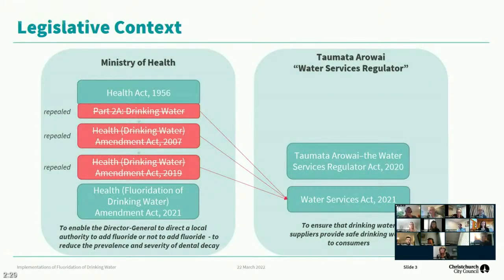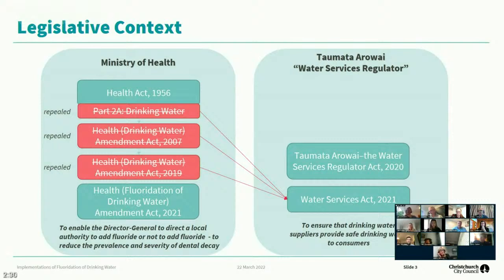It is important to understand where the Fluoridation Amendment Act fits in. Firstly, the Health Act established in 1956 provides the mandates and responsibilities for the Ministry of Health. Previously, drinking water was regulated as part of the Health Act, but this has now been repealed and drinking water is now legislated under the Water Services Act, which together with the Water Services Regulator Act provides the mandates for the new water services regulator. The purpose of the Fluoridation Amendment Act is to direct the local authority to add or not to add fluoride to drinking water, to reduce the prevalence and severity of dental decay. This is completely separate from the drinking water regulations legislated by the Water Services Act, which has the purpose to ensure that drinking water suppliers provide safe drinking water to consumers.